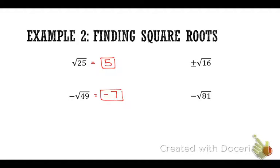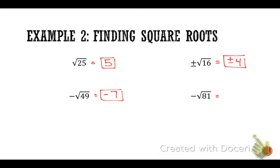For the positive-negative square root of 16, you keep that sign — whatever sign is in front of the radical, you keep that sign in your answer, so the answer is positive-negative 4. And the negative square root of 81 is negative 9. Good job, guys — doing well.